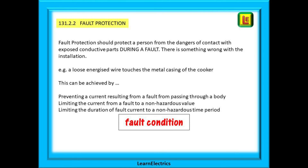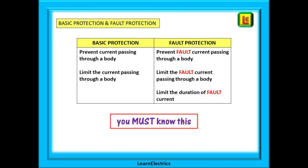Now look at regulation 131.3.1 — fault protection should protect a person from the dangers of contact with exposed conductive parts during a fault. It is telling us that something is wrong with the installation — for example, a loose energized wire touches the metal casing of a cooker. Protection can be achieved by preventing a current resulting from a fault from passing through a body, limiting the fault current to a non-hazardous value, or limiting the duration of fault current to a non-hazardous time period. This slide compares the two: basic protection is on the left, fault protection on the right. In the exam, a question on fault protection will require an answer using the word 'fault' — you must know the difference.